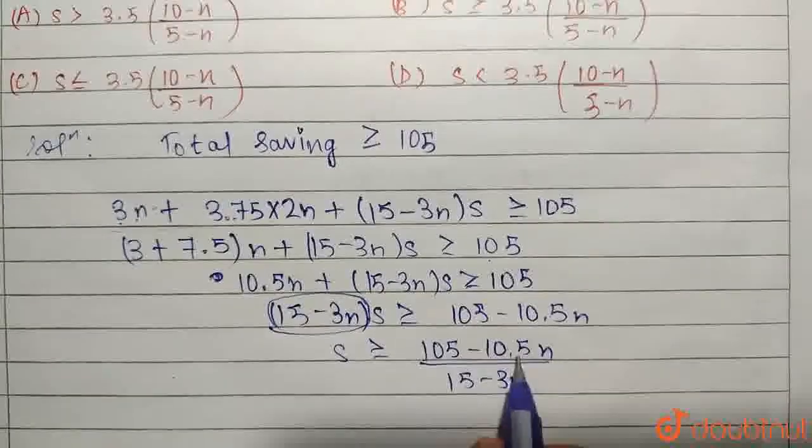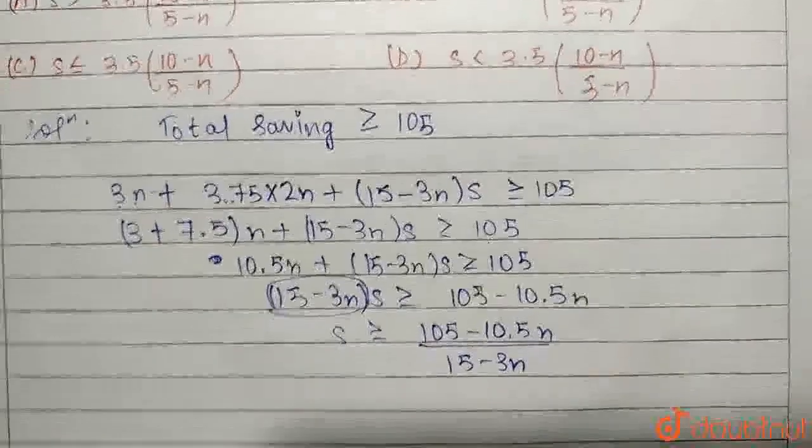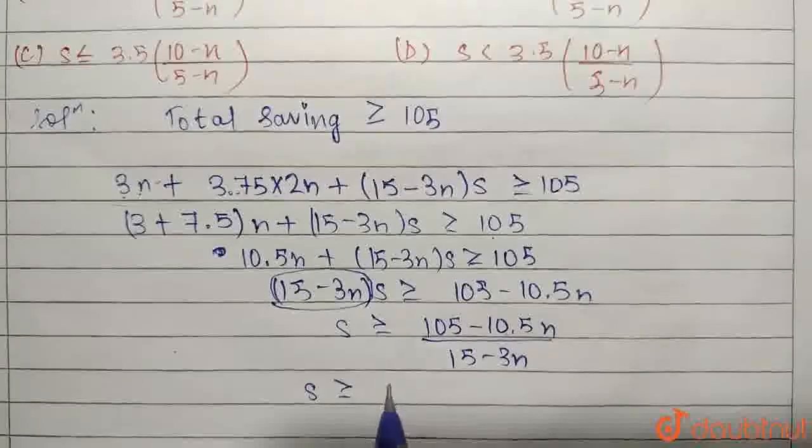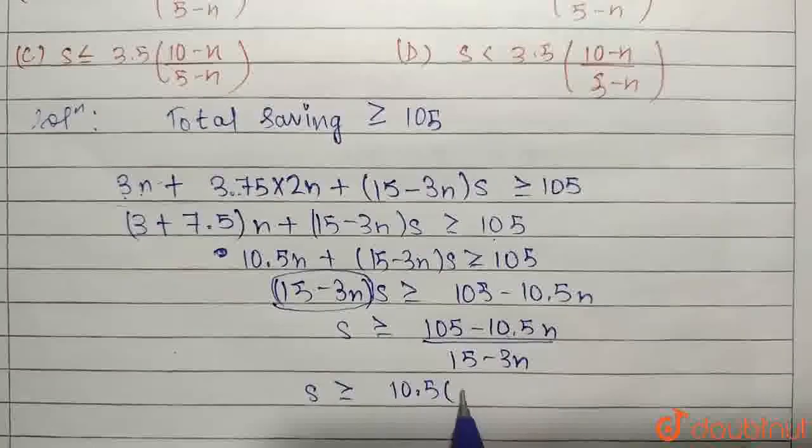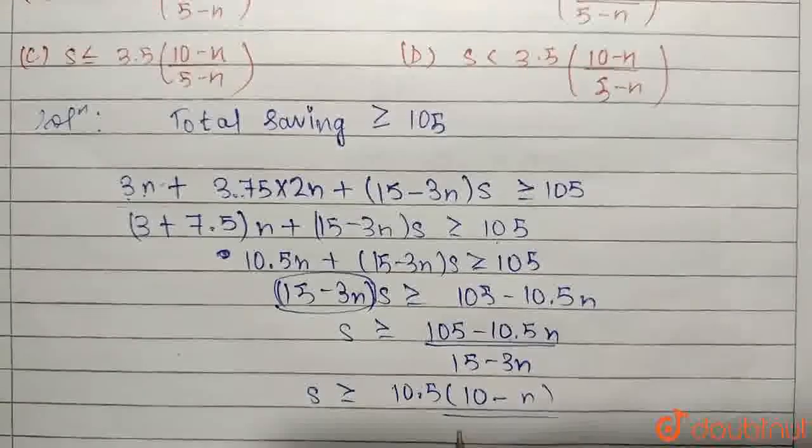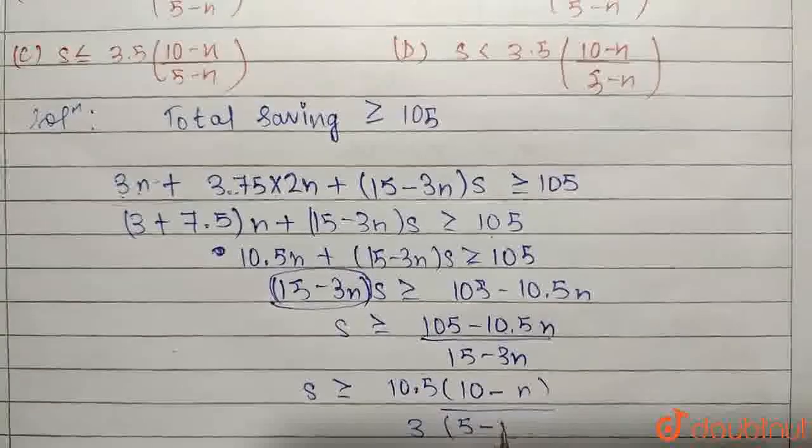Now I can take the multiplication factor over here. I can write S greater than or equal to 10.5, this leaves 10 minus N, divided by taking 3 common here, 3, 5 minus N.